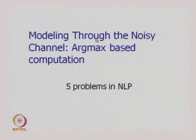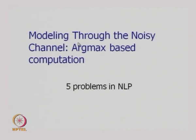We now introduce modeling through the noisy channel argmax-based computation. The question we are asking is: natural language data is in the form of raw text, and on top of that we produce labels — it could be part-of-speech tag labels, named entity labels, or parse trees which are bracketed structures. How do we produce these labels? These labels are produced by a technique called modeling through the noisy channel argmax-based computation, which we will illustrate by means of five problems in natural language processing.